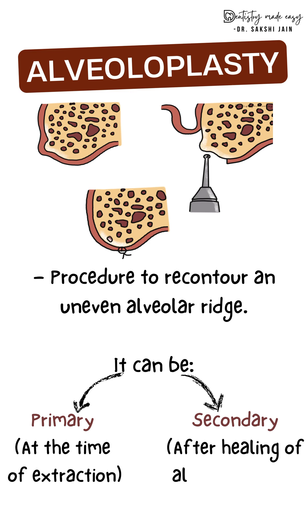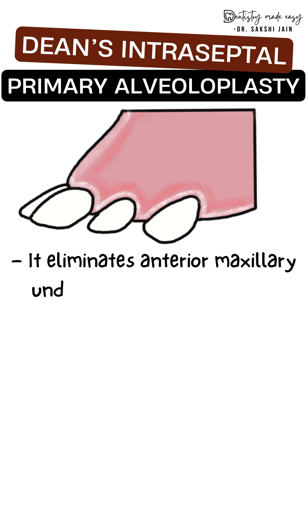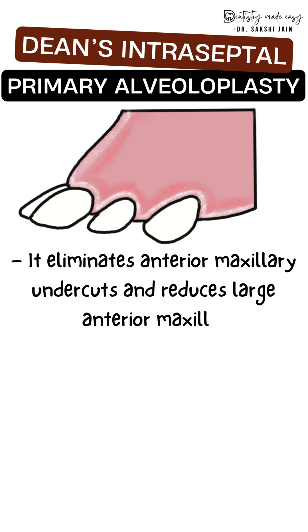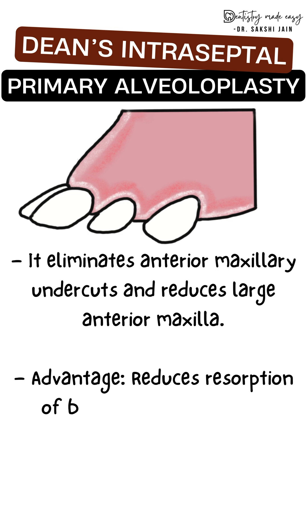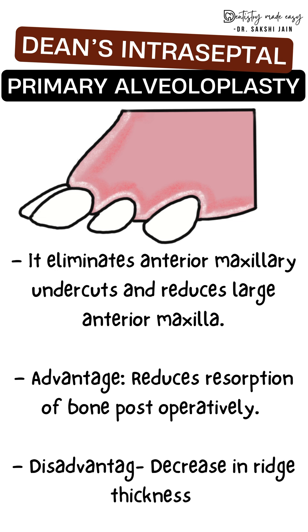Primary alveoloplasty is done at the time of extraction, and secondary is done after healing of the ridge. Dean's intraceptal primary alveoloplasty, as the name says, is done immediately after extraction. It is done in the maxilla only, mainly the anterior region, and is used to reduce gross maxillary overjet and undercuts, and also reduces the anterior maxilla. The advantage is that periosteal attachment is maintained, thereby reducing bone resorption, but the disadvantage is it decreases ridge thickness.